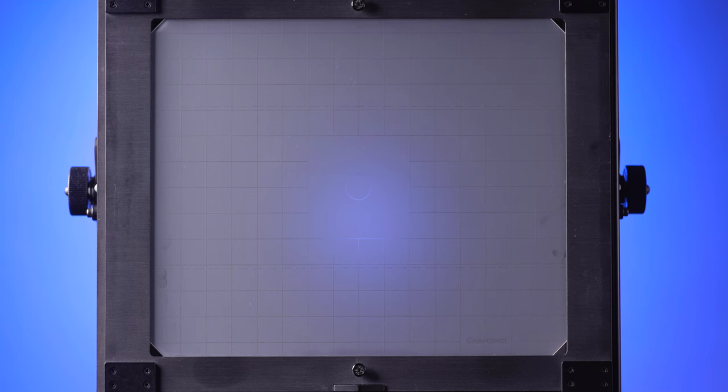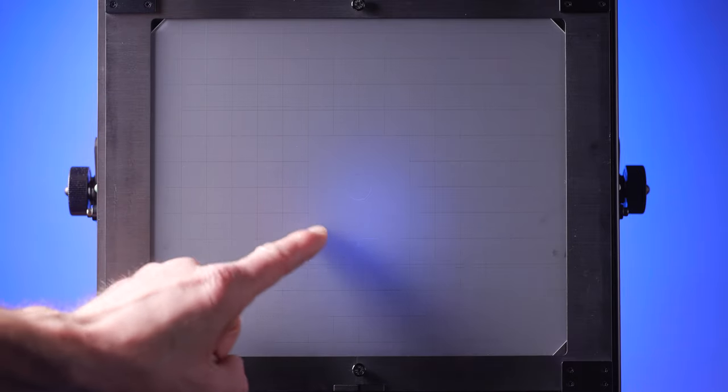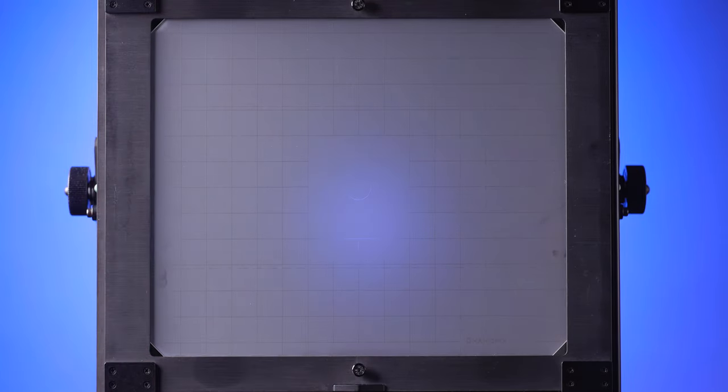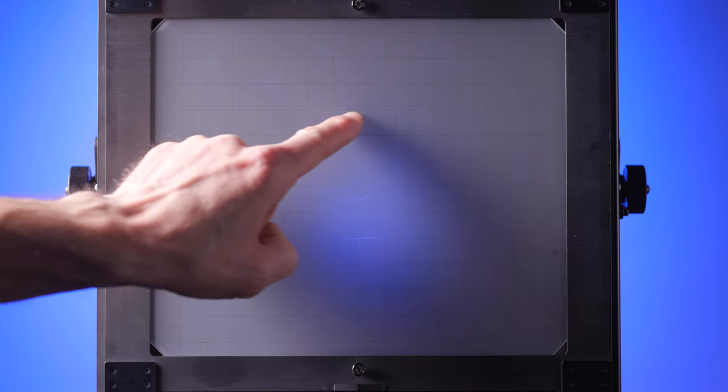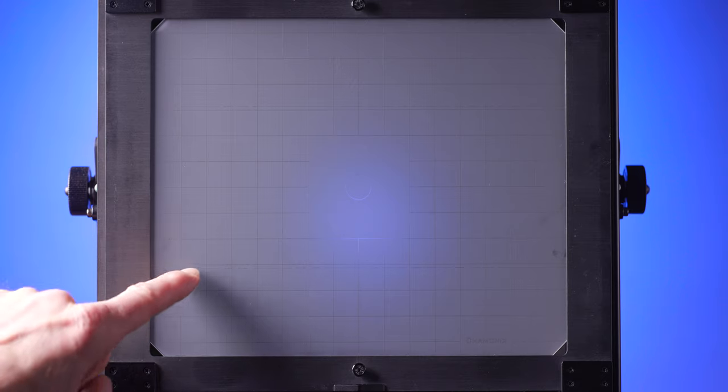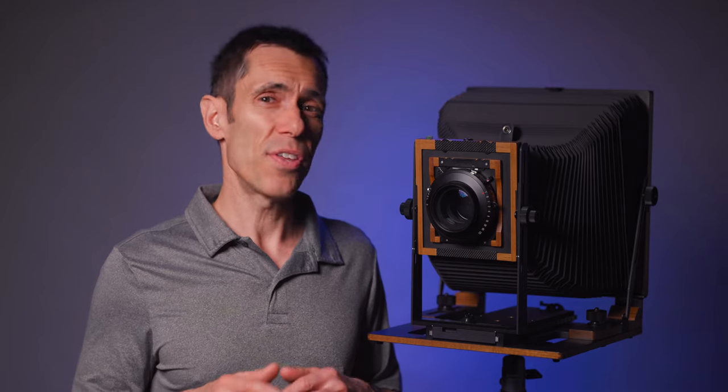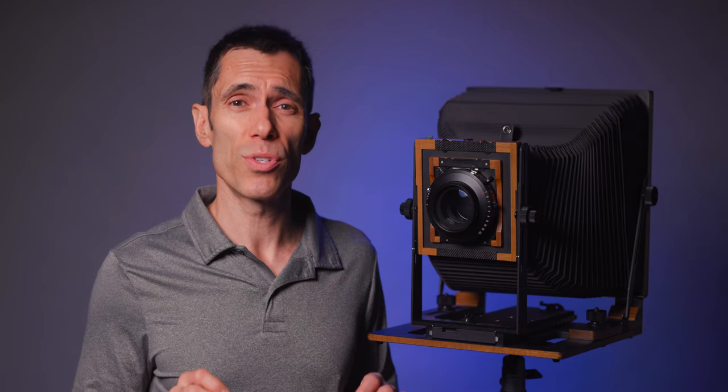What I appreciate about this ground glass is the spacing of the grid lines as well as the square and circle that serve as indicators of the center. Additionally, there are two dash lines to indicate a 4x10 area on the ground glass. This is perfect for helping me compose an image when I want to record a high-resolution pano but still want the option of a full 8x10 piece of film.